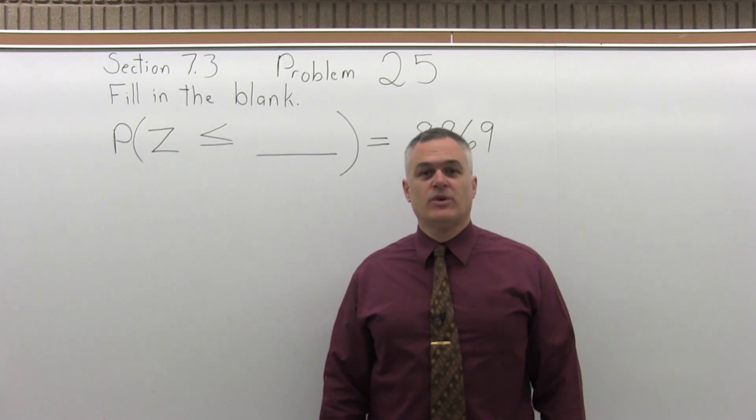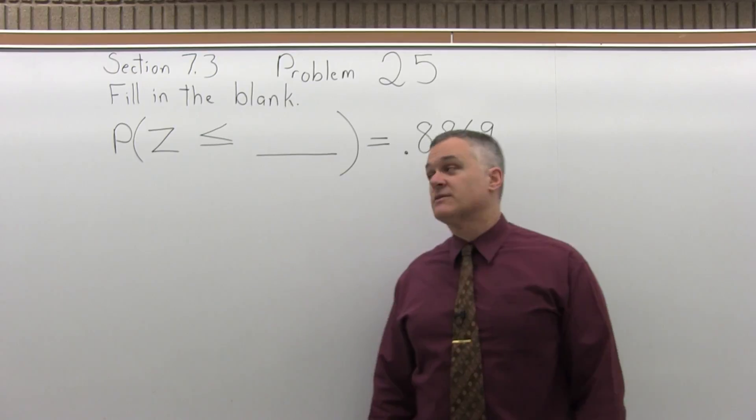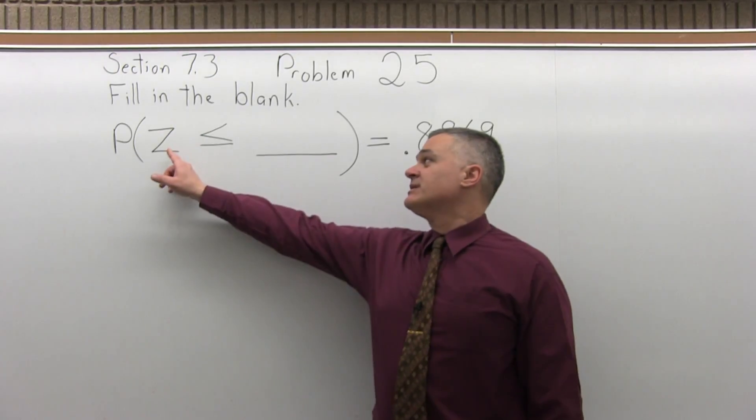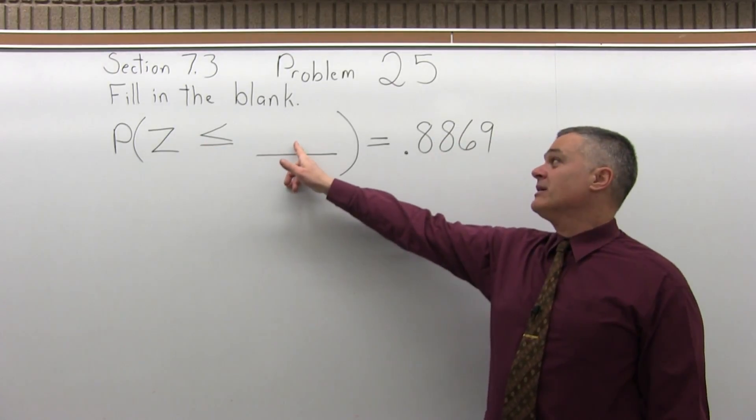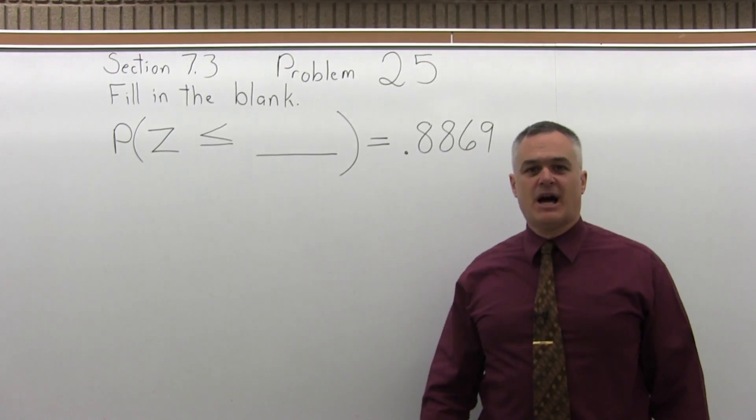This is Section 7.3, Problem number 25. It says fill in the blank: the probability that Z is less than or equal to blank equals .8869.